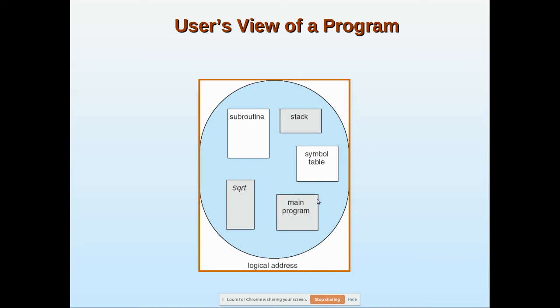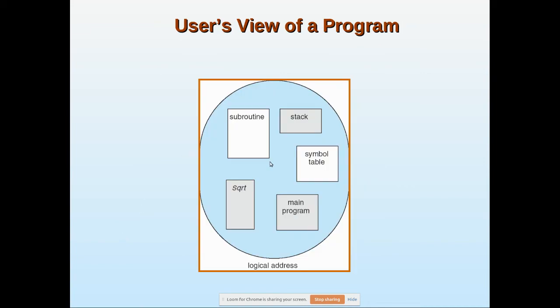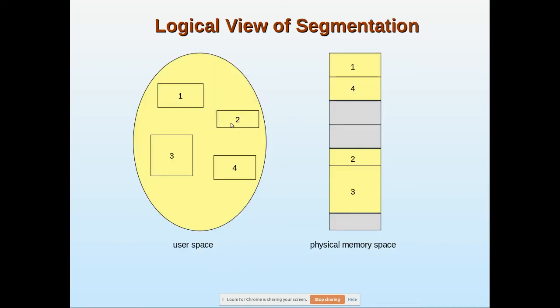In the logical view of segmentation, segments will be given numbers - one, two, three, four. When you give numbers, one is stored here, two is stored here, three is stored here, four is stored there. This is one process but it is stored in different places. The necessity that they must be in a continuous memory location is eliminated here in segmentation.